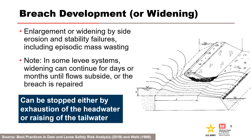In the final phase, the breach has usually reached its full depth and continues to widen as long as the driving hydraulic head is available. Widening is accomplished through a combination of foundation and structure erosion and stability failures, which includes episodic mass wasting of material from the banks of the developing breach. Widening can be stopped either by exhaustion of the headwater or raising of the tailwater that reduces breach inflow to non-erosive velocities. In some levee systems, widening can continue for days or months until flows subside or the breach is repaired. The end breach time in the HEC-RAS model can occur before the true end of the breach widening phase.